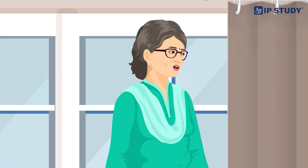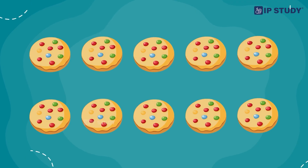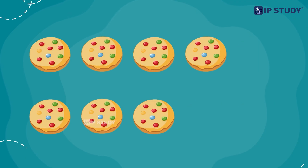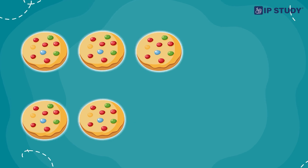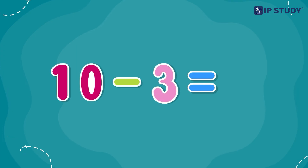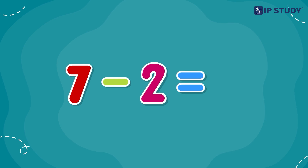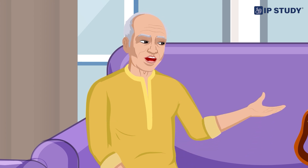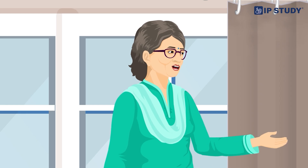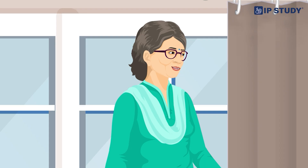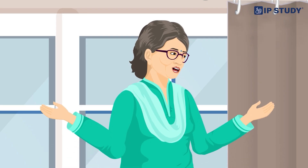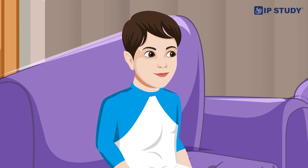A real-life problem is presented: you have 10 cookies, eat 3 for a snack, and give 2 to a friend — how many are left? A child recognizes they need to subtract twice: first 10 minus 3 equals 7, then 7 minus 2 equals 5. They are praised for excellent teamwork and reminded that math is all around us and we use subtraction every day without realizing it.